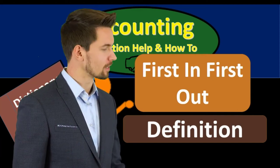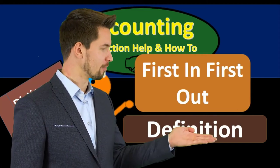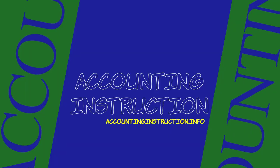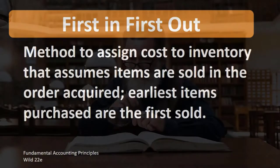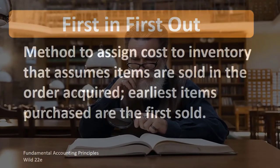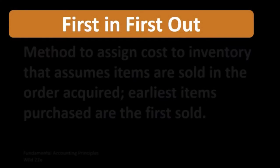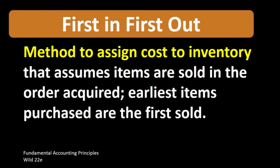In this lecture we will define first in first out inventory method, also known as FIFO. According to fundamental accounting principles, 22nd edition, the definition of first in first out is a method to assign cost to inventory that assumes items are sold in the order acquired — earliest items purchased are the first sold.